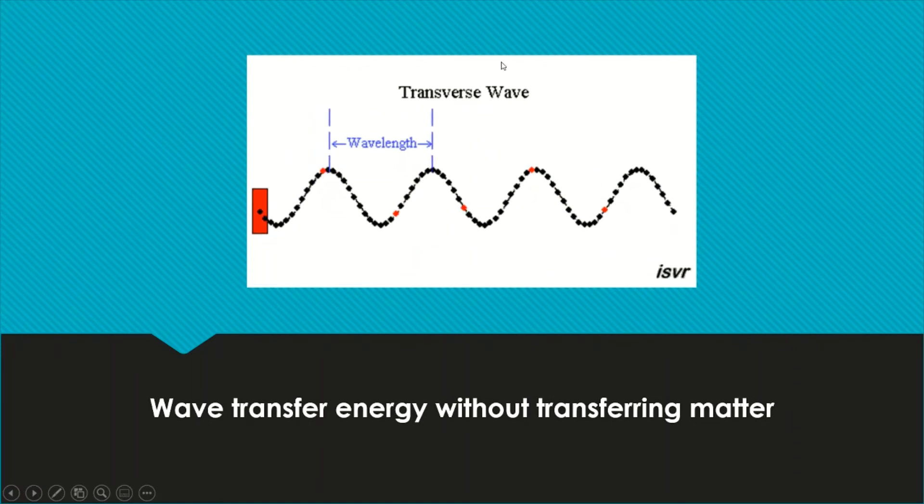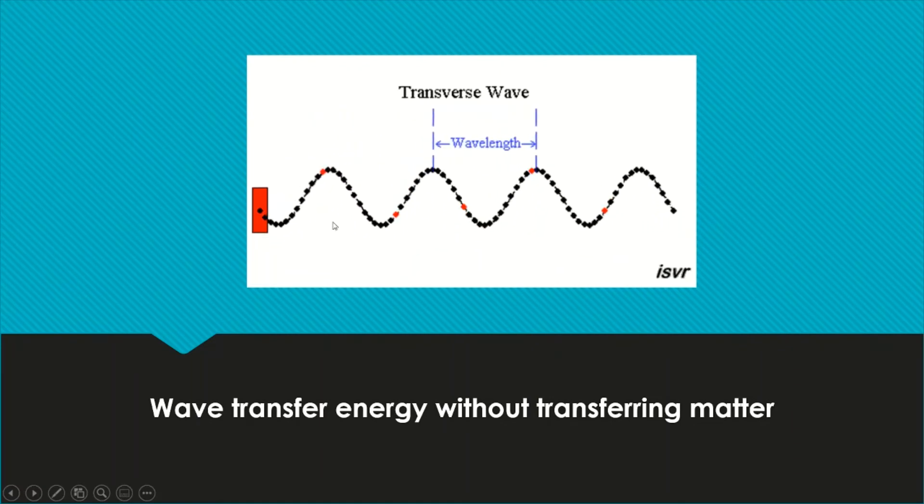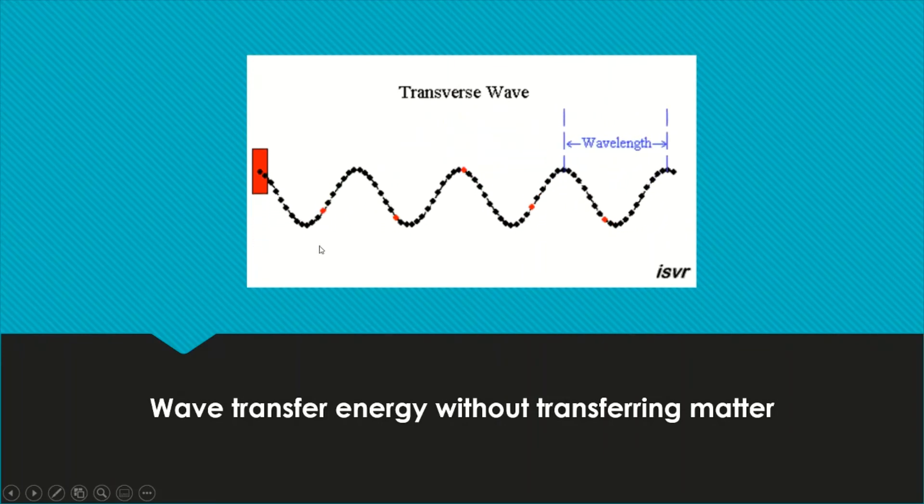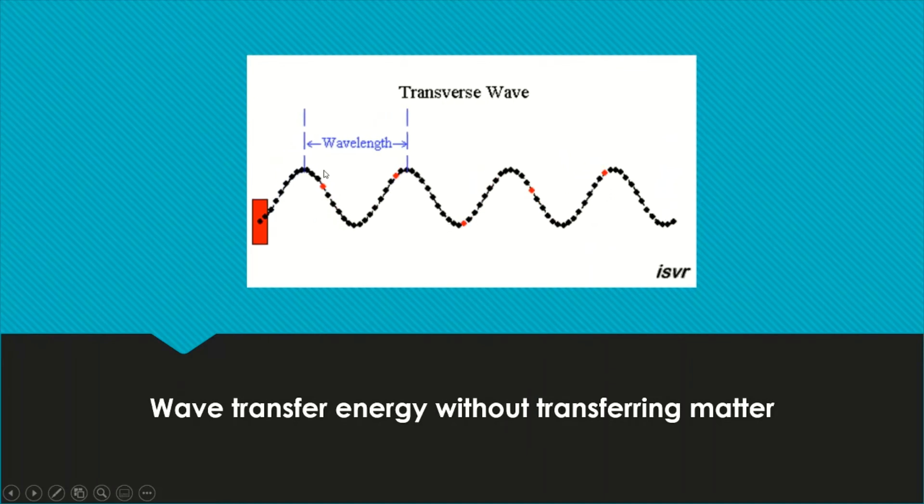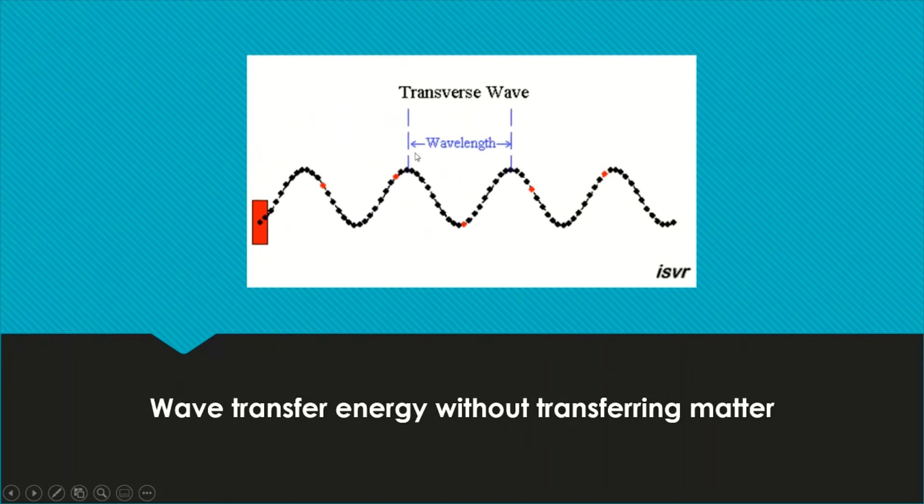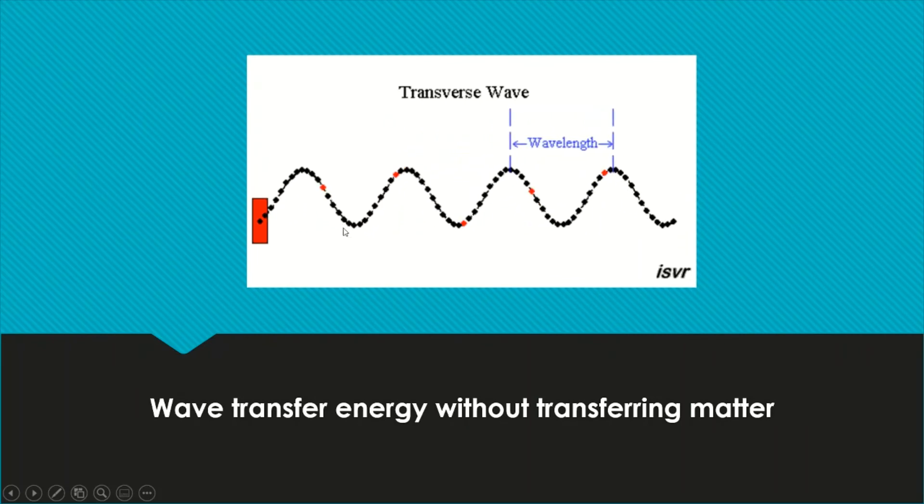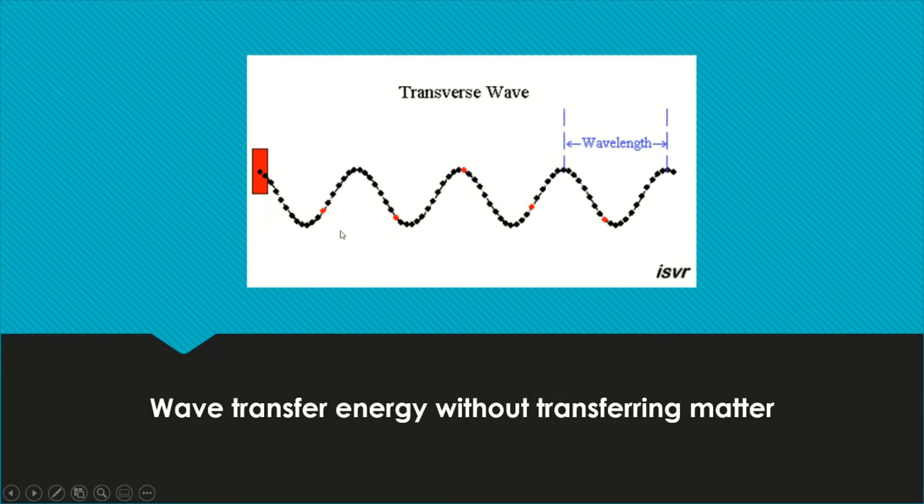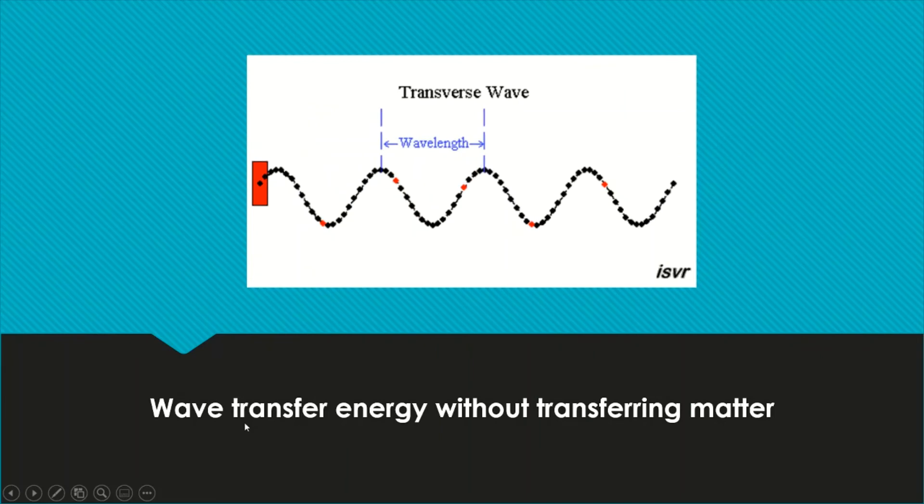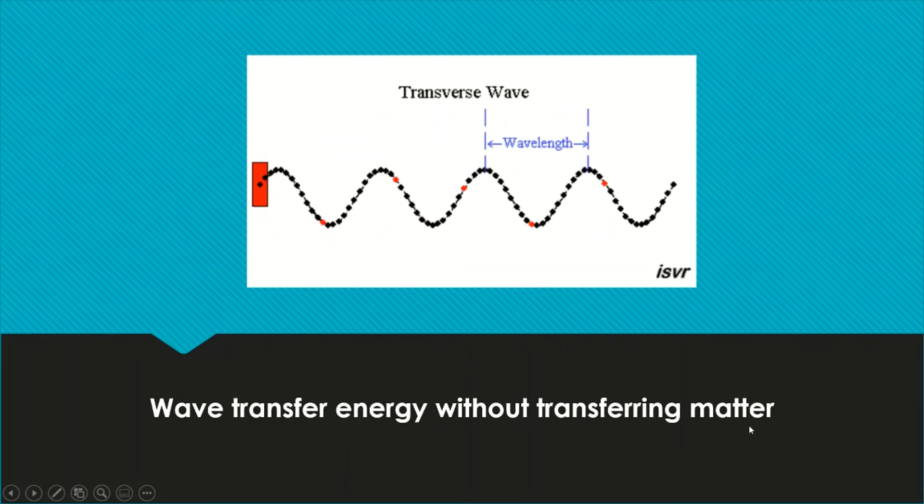This is another type of wave. This particle of the wave is moving upwards and downwards. But the energy of the wave is moving forward. Again, the particles do not move together with the energy of the wave. This tells us that wave transfers energy without transferring matter.